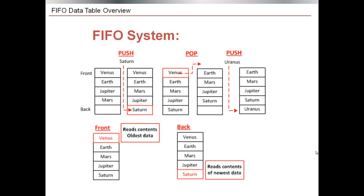The difference between an index table and a FIFO and LIFO table is how the information is written to each table. Instead of writing to a specific row index, both FIFO and LIFO systems use a push function to write information. They also use a pop function to remove information from the table. Each system writes, reads, and removes rows in a certain way.